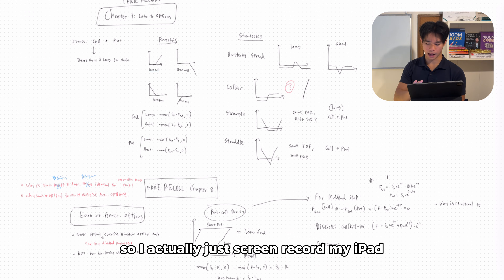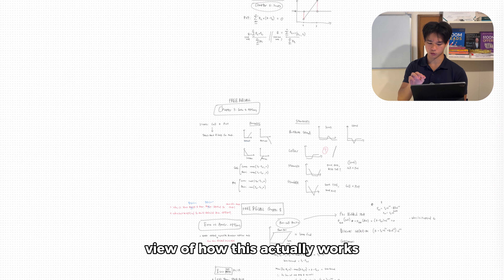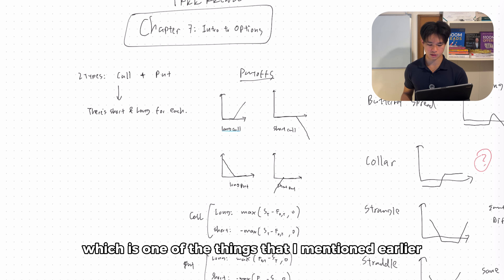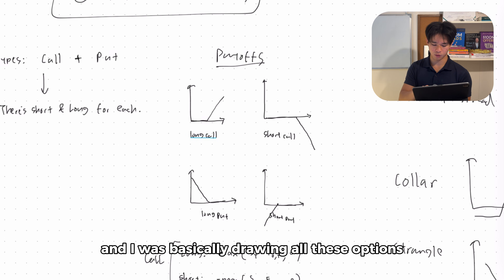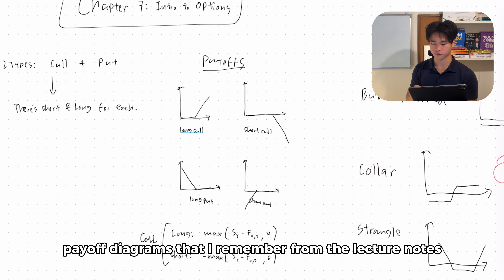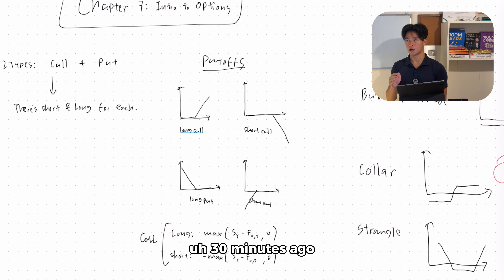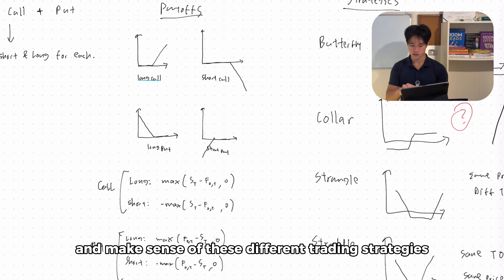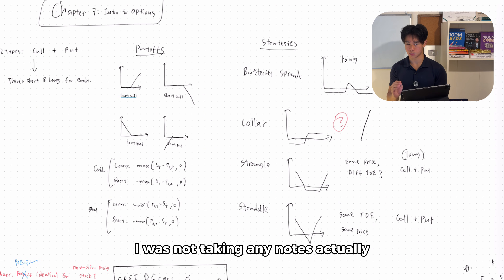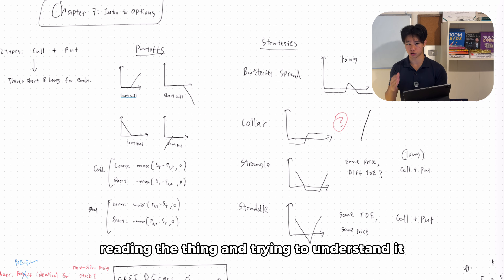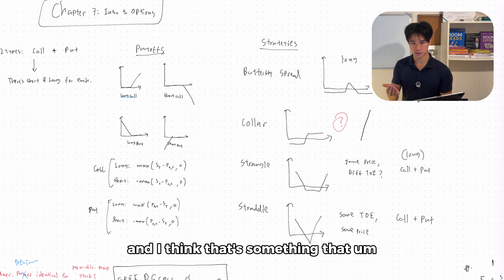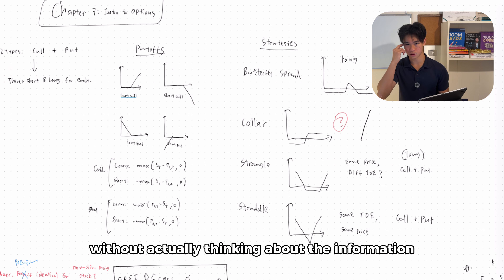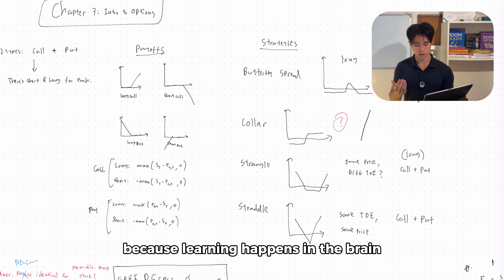I'll screen record my iPad so you can get a bigger view of how this actually works. Here I did a free recall on chapter seven, drawing all these options payoff diagrams that I remember from the lecture notes. About 30 minutes before this, I was reading the lecture notes and actually trying to understand and make sense of these different trading strategies — I was not taking any notes. I was just reading and trying to understand it. And I think that's something important: if you're simply taking notes on the stuff you're learning without actually thinking about the information, you're not actually learning, because learning happens in the brain.